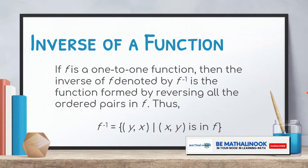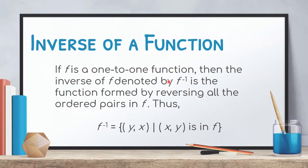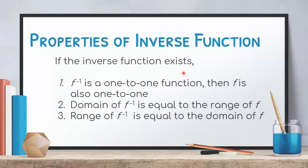In the previous video, we discussed that to determine the inverse of a function, denoted by f raised to negative one, we need to reverse the domain and the range of the given function. Also, the properties of an inverse of a function are the following: if the inverse of a function is one-to-one, then the function is also one-to-one. Second, the domain of the inverse of a function is equal to the range of the function. And finally, the range of the inverse of a function is equal to the domain of the function. We also discussed how to determine the inverse of a function given a set of ordered pairs.